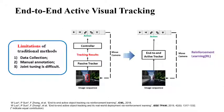Limitations of the traditional method include: first, data collection can be hard; second, training an accurate passive tracker via supervised learning is costly because manually annotating the target in each frame is labor-intensive, and if the target changes a new detector may be needed; third, it is difficult to tune the two components jointly due to the large joint parameter space.